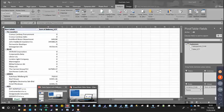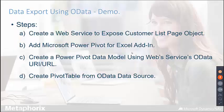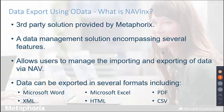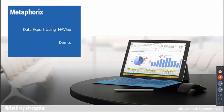The third option for data exports is NavLink. NavLink is a third-party solution provided by Metaphorics. Its main purpose is as a data management and data manipulation solution encompassing several features, allowing NAV users to manage the importing and exporting of data via Navision, including EDI. Data can be exported in several formats including Microsoft Word, Microsoft Excel, PDF, XML, HTML, or CSV.